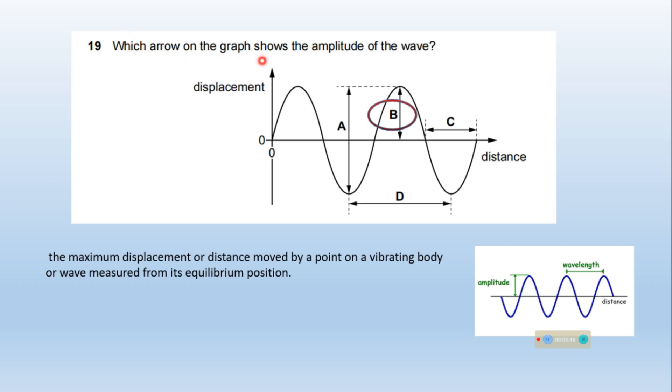Which arrow on a graph shows the amplitude of the wave? This B part shows the amplitude of the wave. And how we define amplitude? The maximum displacement or distance moved by a point on a vibrating body or wave measured from its equilibrium position. This is the equilibrium position and this is the maximum distance. So B is the amplitude.